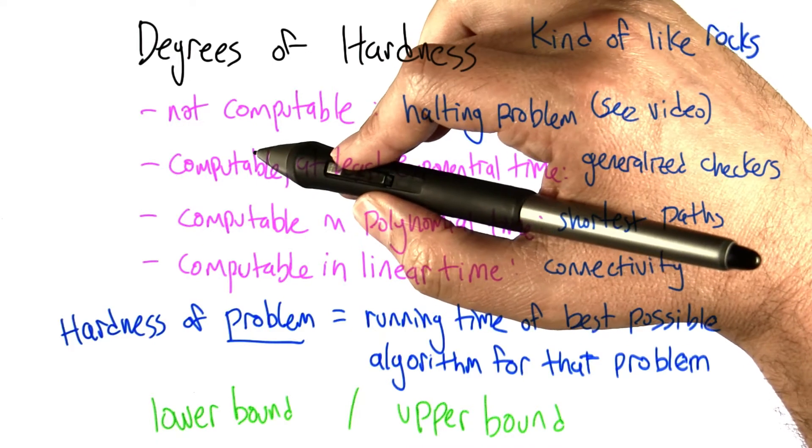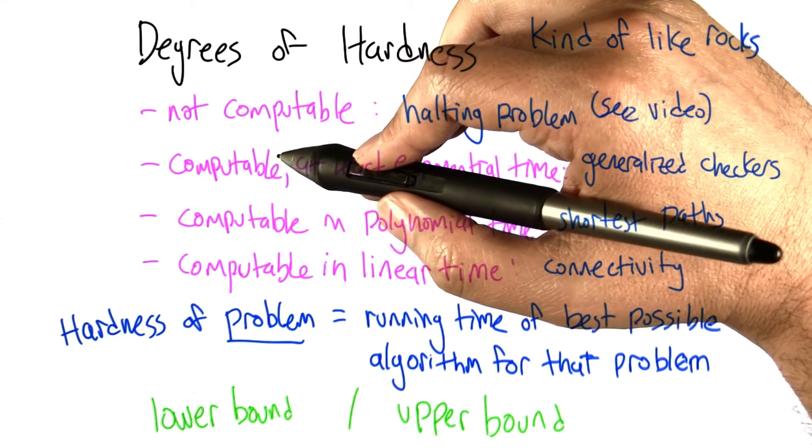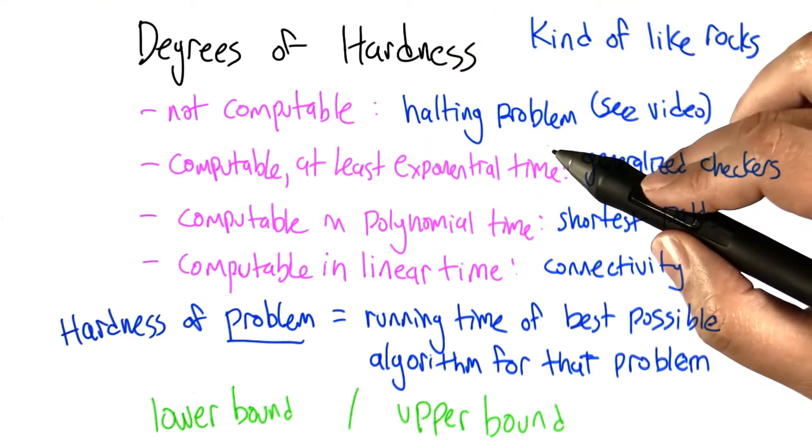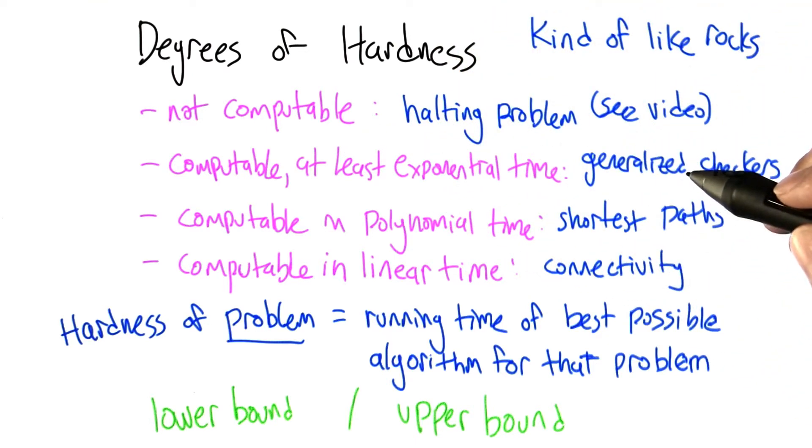There are some other problems, like I mentioned before, that are computable. We can actually solve them with a computer program, but they require at least exponential time. I mentioned generalized checkers as an example of that.